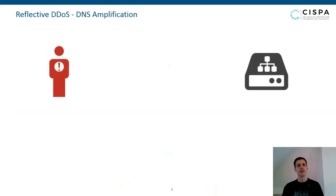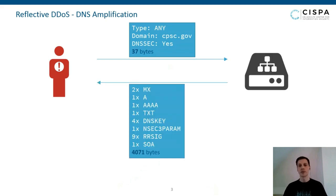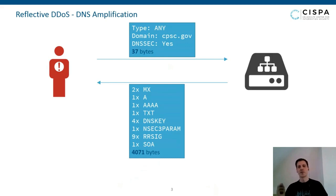One common example is DNS. If you query a DNS server for the domain cpsc.gov and ask for any query type, you're sending a 37-byte packet, but the server sends back an MX record, an A record, a quad-A record, a text record, four keys, an NSEC3 param, nine signatures, and more. For the 37 bytes you send, you get back 4,071 bytes — an effective bandwidth amplification of roughly 110.